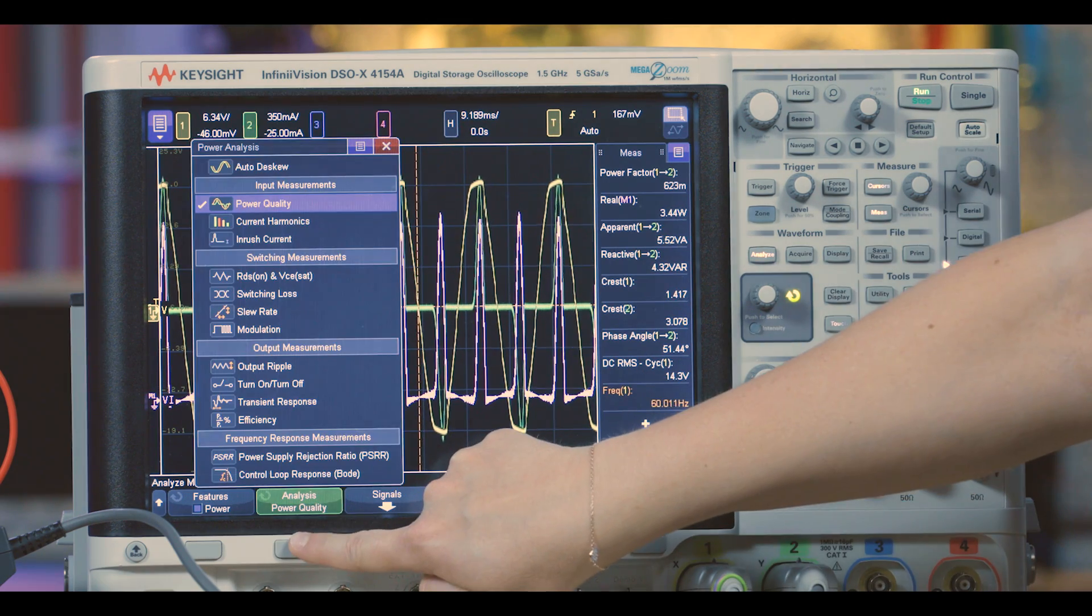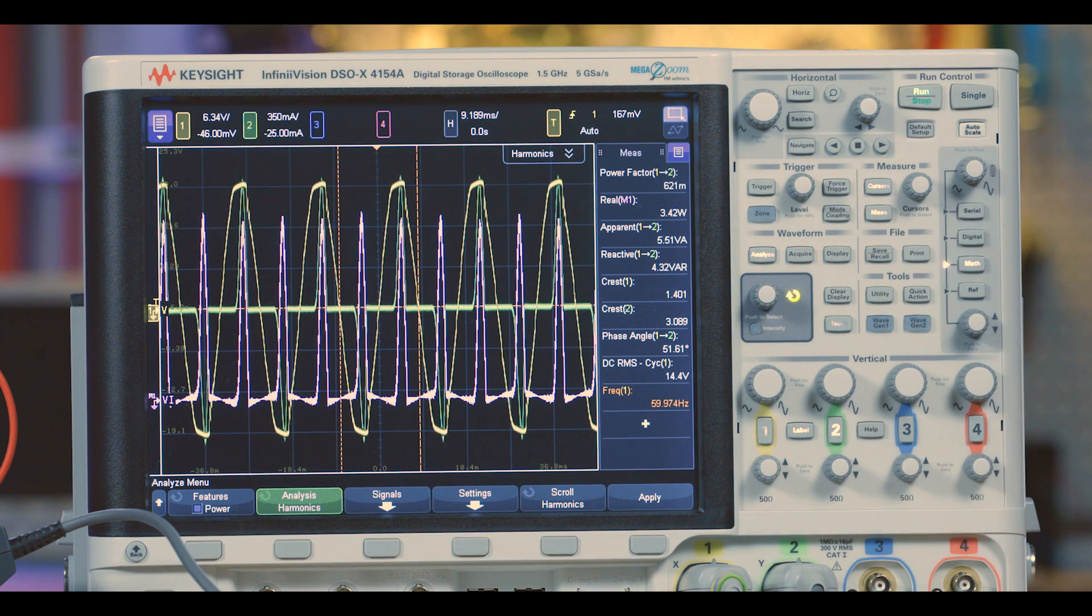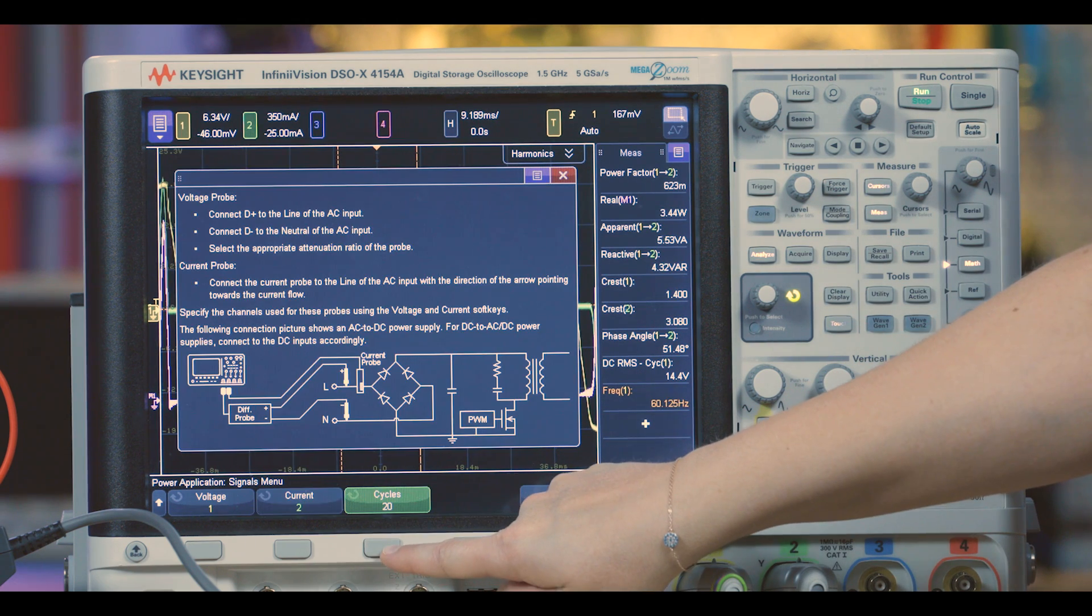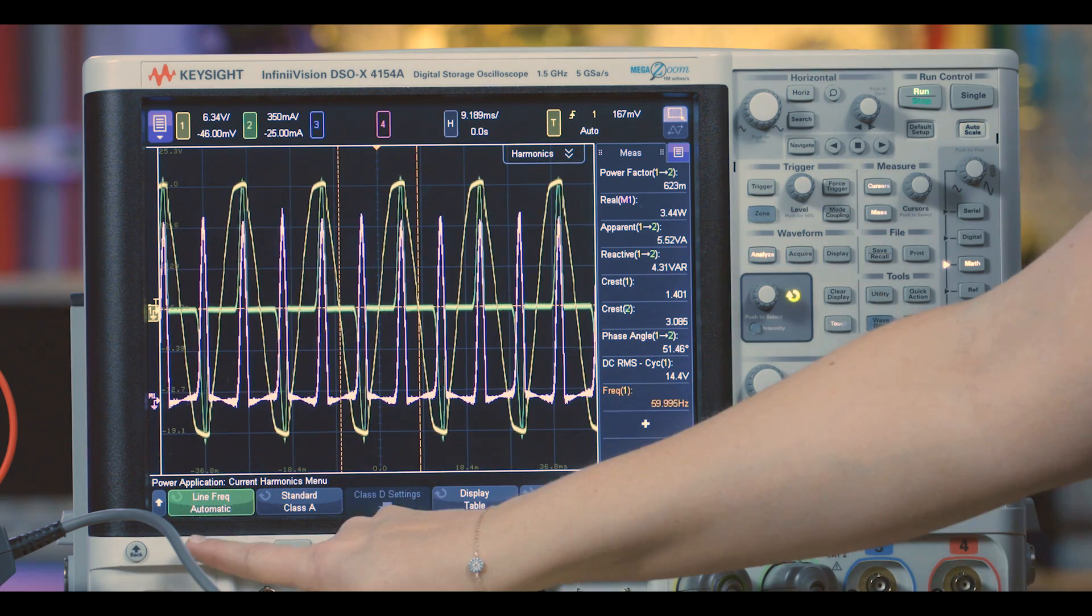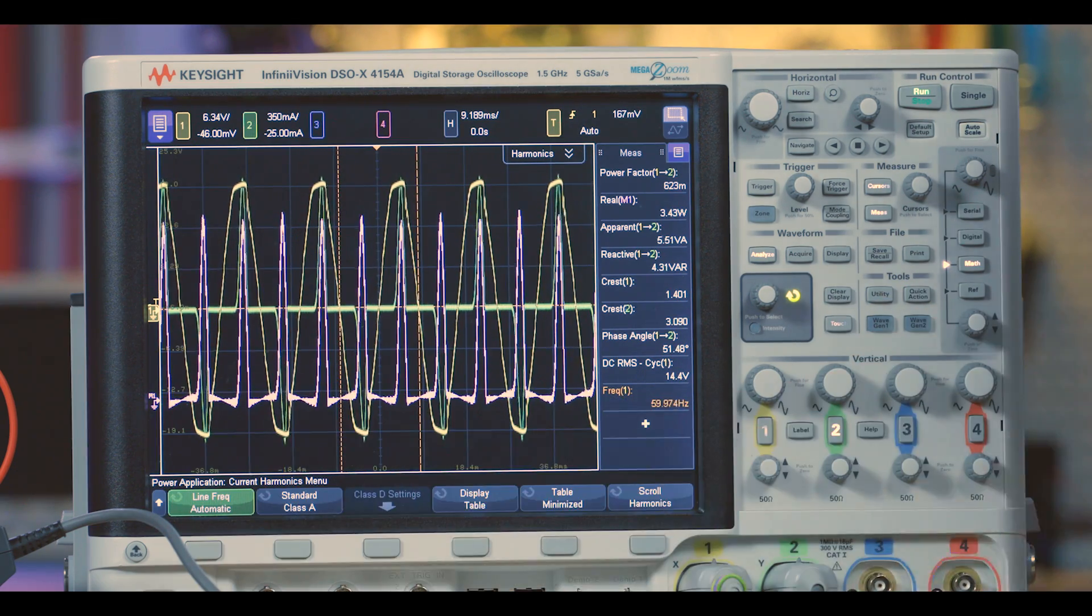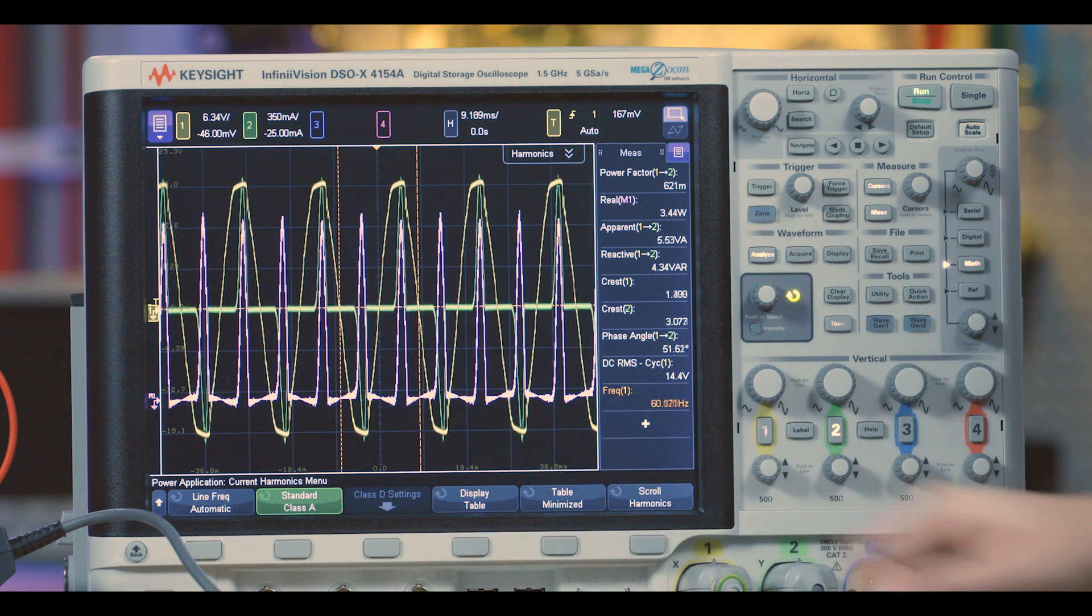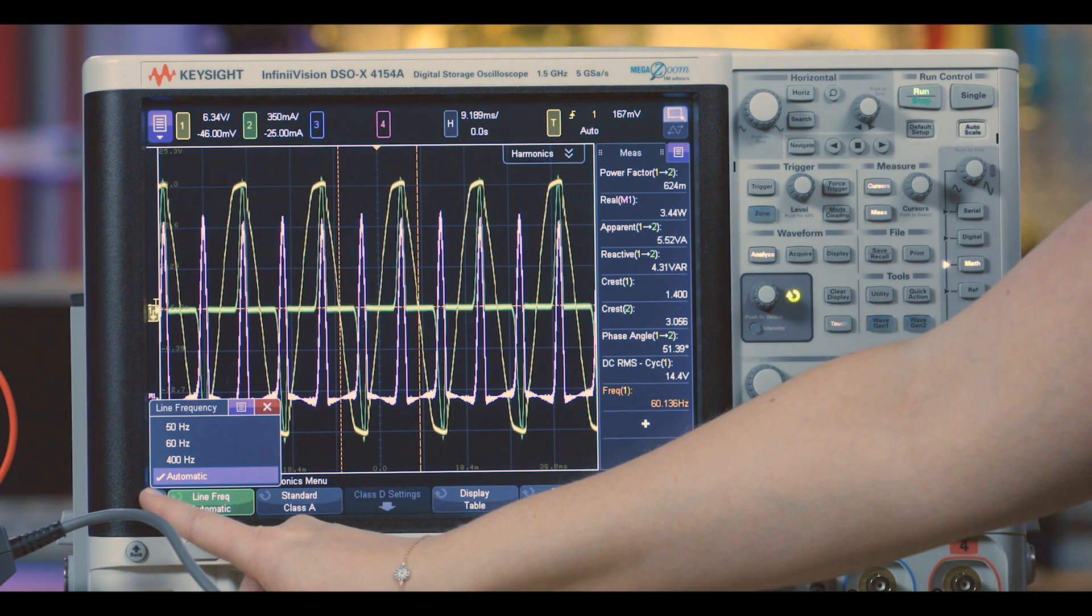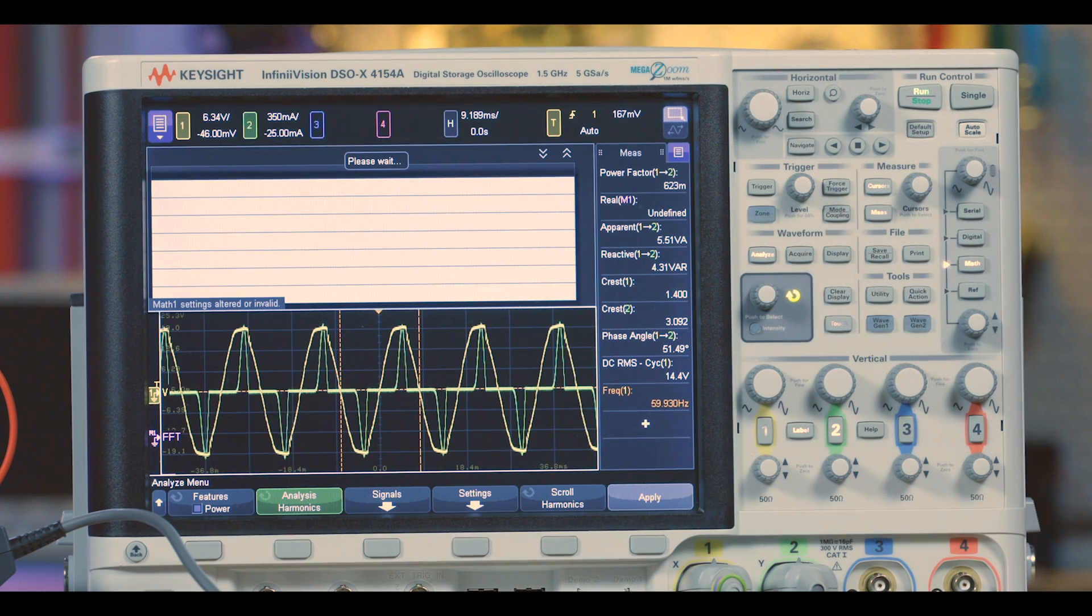We haven't changed our probe setup, but if this was the first test you were setting up, you could adjust those with the signal menus as before. In the settings, I can choose the frequency of the signal and the IEC standard that I need to test to. My design is qualified as a class A. Now I'll hit apply to begin the current harmonics measurement.